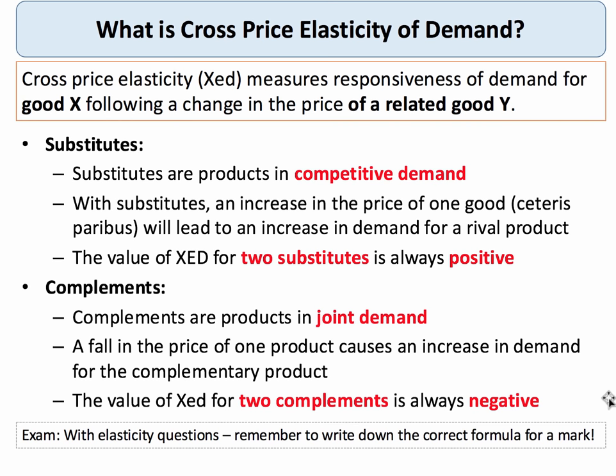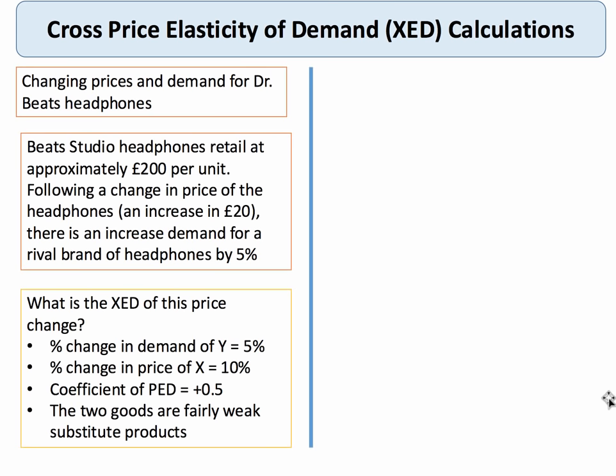Keep in mind that in the exam, just writing down the formula will get you a mark. For cross elasticity, it's the percentage change in the demand for X divided by the percentage change in the price of Y. Here are a couple of examples we can feed into that formula.